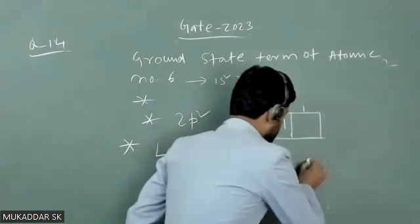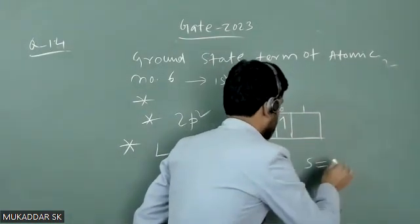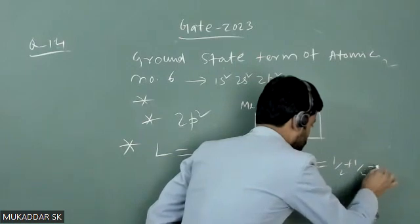Both spins are parallel so net spin will be how much? It will be half plus half, that will be 1.